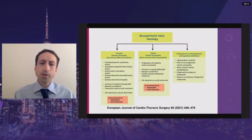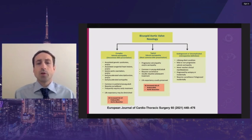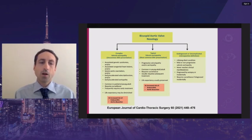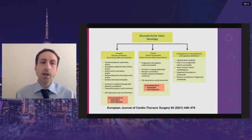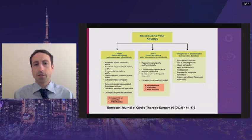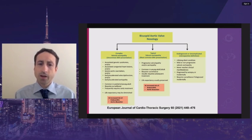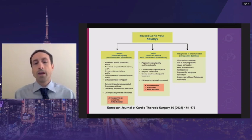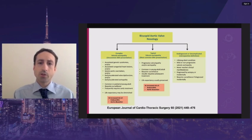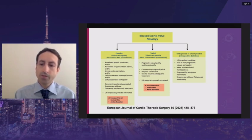In 2021, there was an international consensus statement on the nomenclature of bicuspid aortic valves, which at the highest level broke bicuspid aortic valves into complex, typical, or uncomplicated. Complex bicuspid aortic valves were associated with genetic syndromes, other severe congenital heart lesions, early degeneration, and decreased life expectancy. Typical bicuspid aortic valves involved primarily the aortic valve and the aorta, degenerated over time, but were associated with normal life expectancy with properly timed surgical intervention. Uncomplicated bicuspid aortic valves were silent throughout the patient's life and never reached clinical significance.